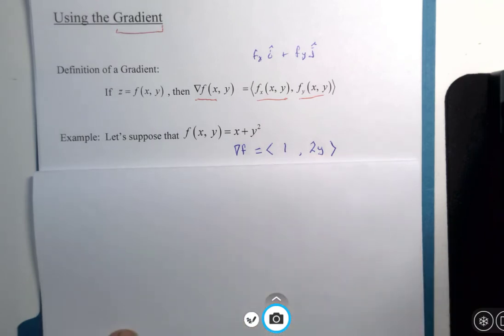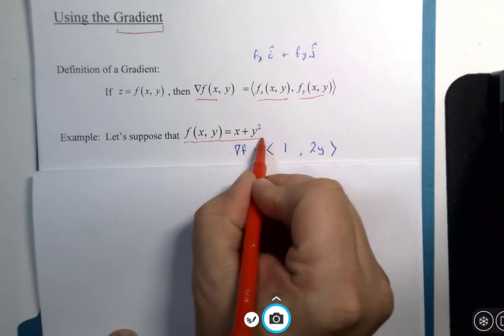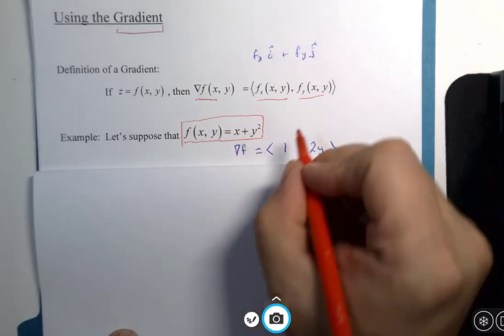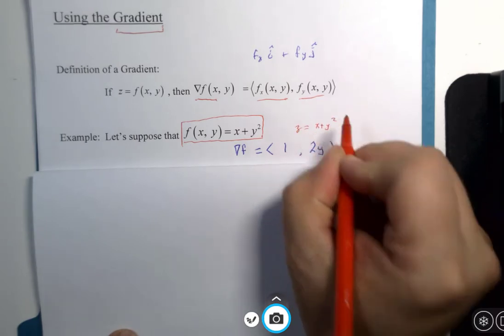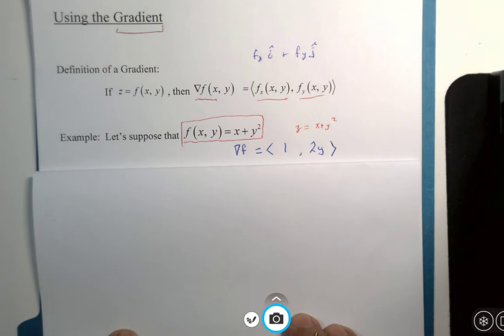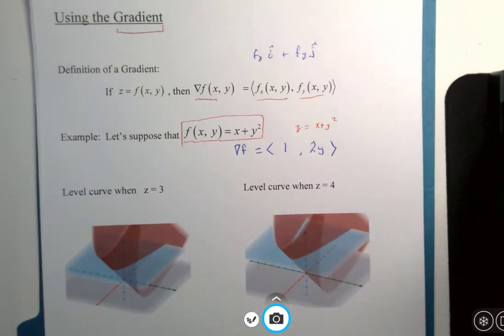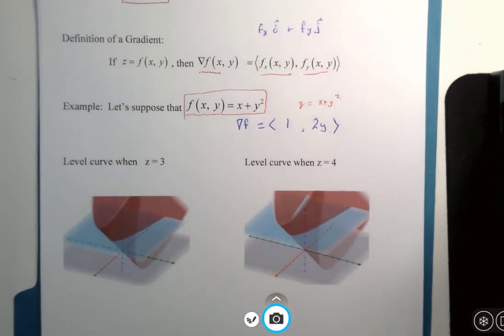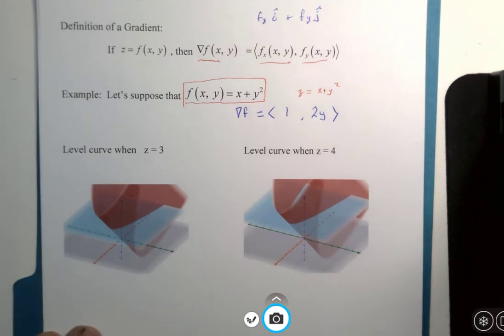So what I've got here are two images that actually show you what this function looks like. This z equals x plus y squared. It's not a graph already in our list of three-dimensional surfaces that we know from memory. So I've just used the help of GeoGebra 3D to show you two versions of the graph. The surface doesn't change, but I'm going to toss in some additional vocabulary.